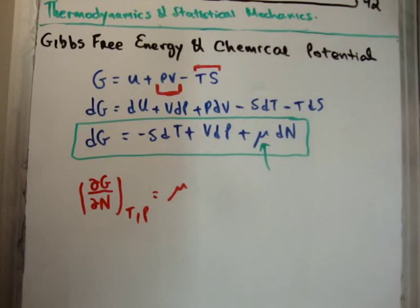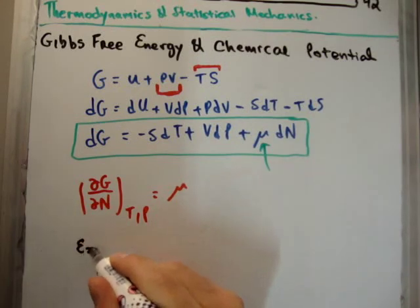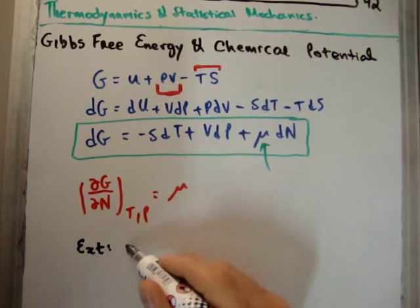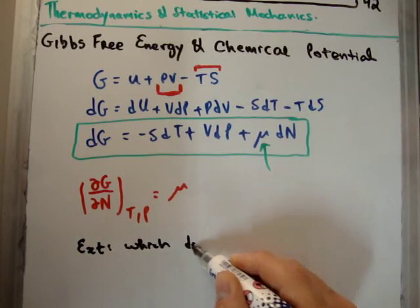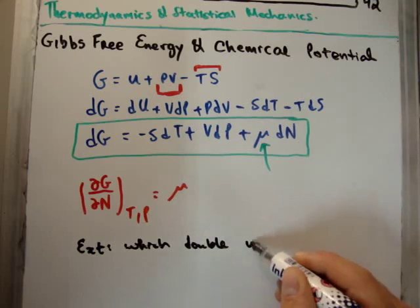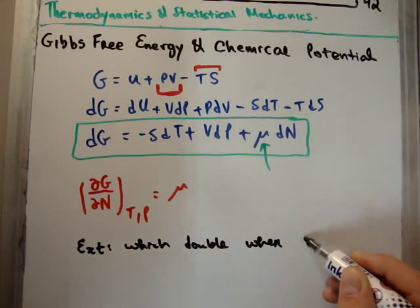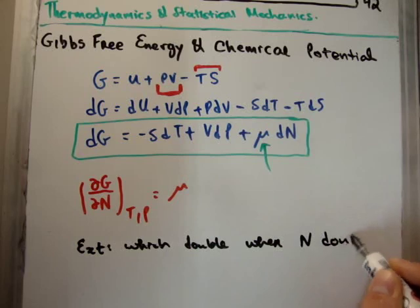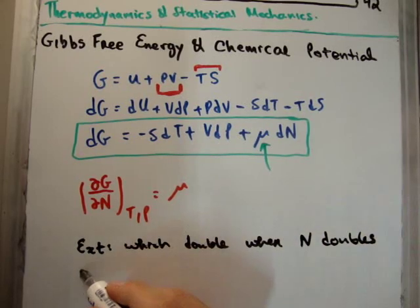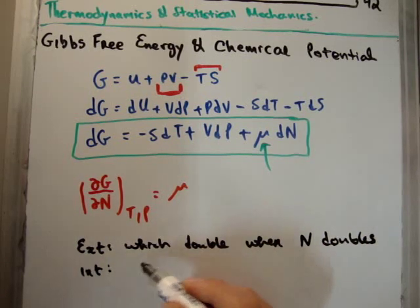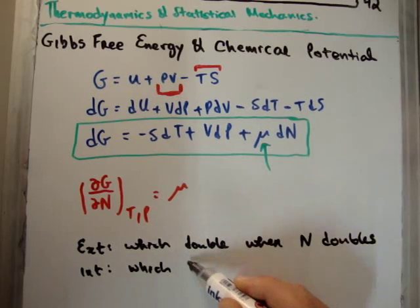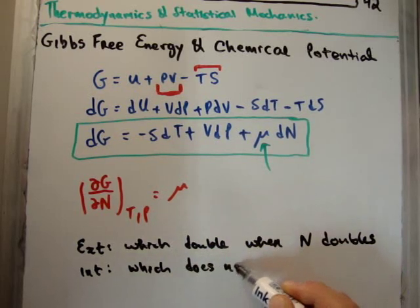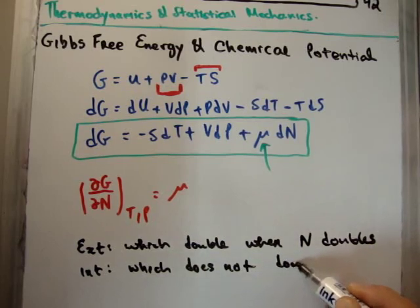Now, in video number 41, I discuss extensive and intensive properties. So generally, an extensive property is one which doubles when you double the number of particles, when N doubles. And we've found that an intensive property is one which does not double when you double the number of particles.